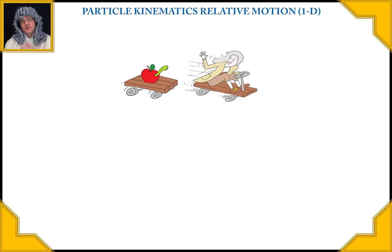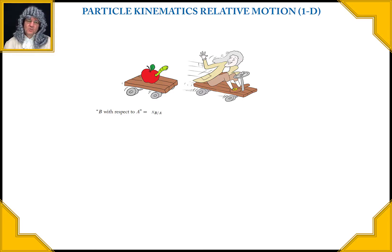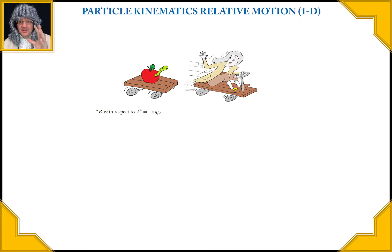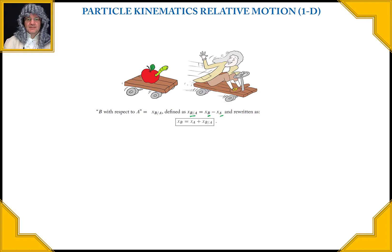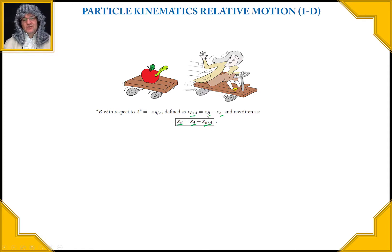Now we switch over to relative motion. We write this using subscripts with a slash, and we refer to it as B with respect to A. We're using A as the reference and B is the point we're concentrating on. So the position of B with respect to A means B minus A — we can think of that as subscript math. If we want to know where B is, we take A and add the relative position to find B.